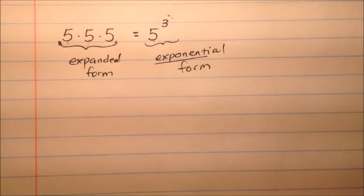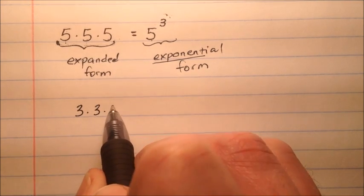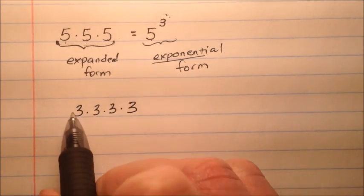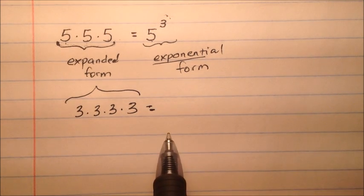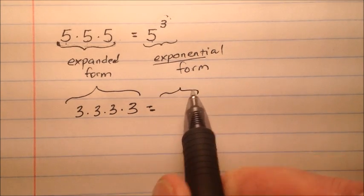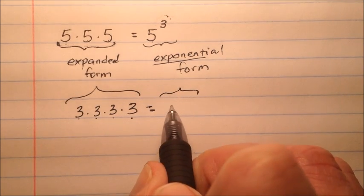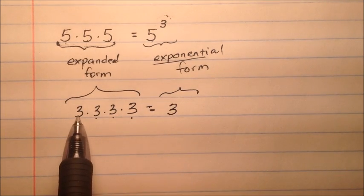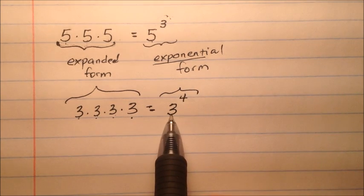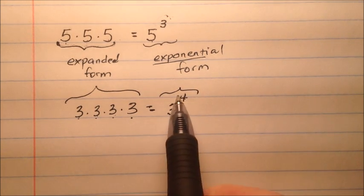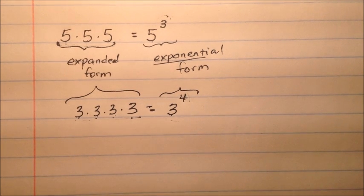For another example, we could say three times three times three times three — that would be your expanded form. Written in exponential form, the number you're multiplying over and over is three, and you're doing it four times. So we read this as three to the power of four. That's what expanded form and exponential form mean.